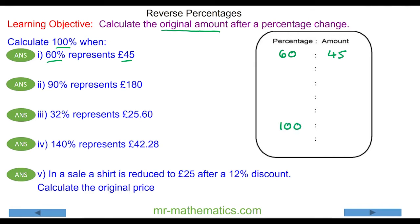We're going to work out 100%, which is the original amount. We're going to use 10% because 10 is a factor of both 60 and 100. To work out 10% we divide the 60% by 6, and then to go from 10 to 100 we multiply by 10, keeping the ratio balanced by doing the same to both sides.